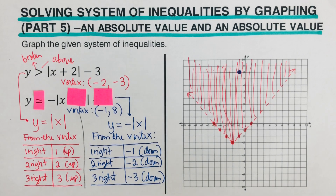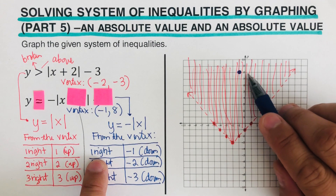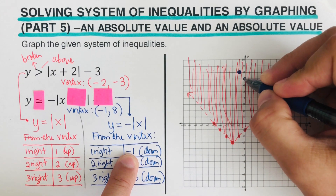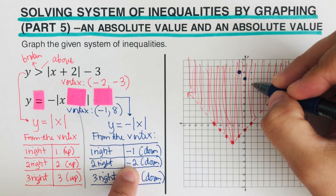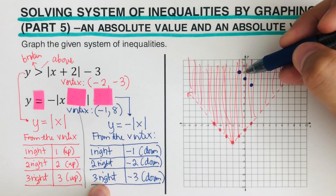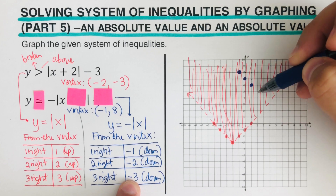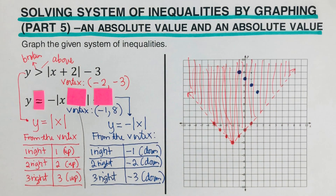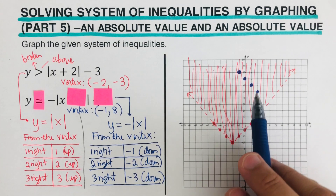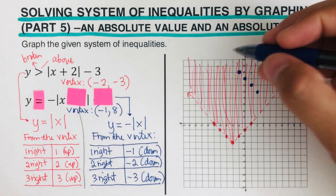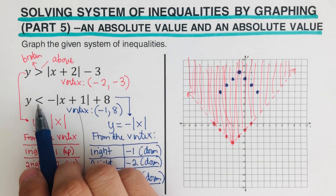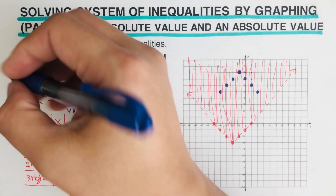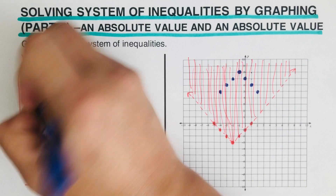From the vertex we go to the right, then down one — that's the next dot. Then right two and down two for the next dot. Then right three and down three. Since this is an absolute value graph, we reflect across the axis of symmetry. Now, are we using a broken line or solid line? Since there's no bar underneath, we use a broken line.